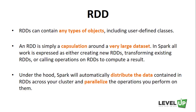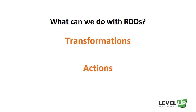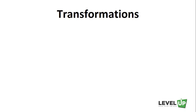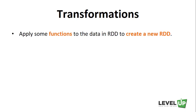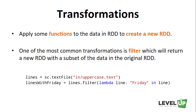Once RDDs are created, what can we do with them? RDDs offer two types of operations: transformations and actions. Transformations basically apply some function to the data in an RDD to create a new RDD. One of the most common transformations is Filter, which will return a new RDD with a subset of the data in the original RDD. For example, we can use Filter to create a new RDD holding just the strings that contain the word Friday.